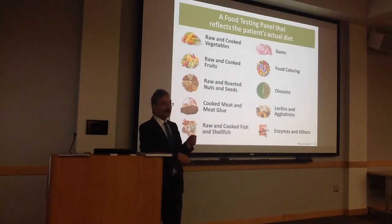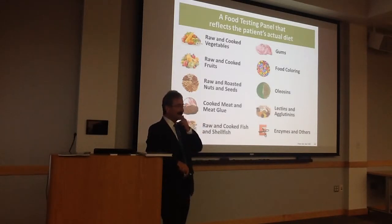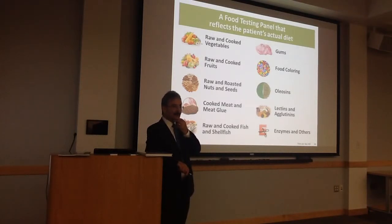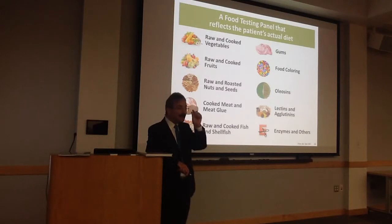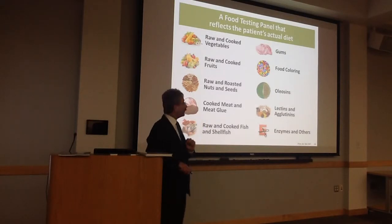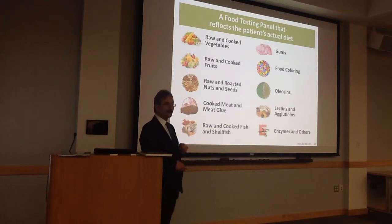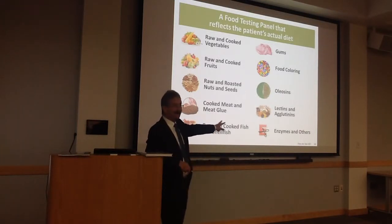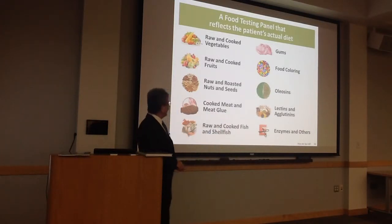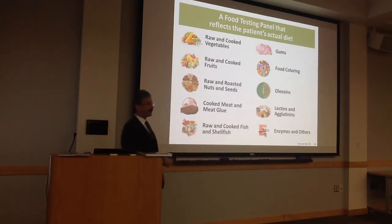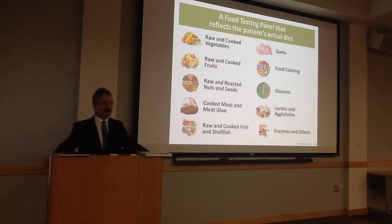Oils — if you have a child allergic to peanuts, can you give them peanut oil? There are very small amounts of proteins called oleosins in oils. That's why we measure antibodies against oleosins. Lectins and agglutinins we discussed. There are other enzymes as well. This is a panel of 180 foods that I developed.